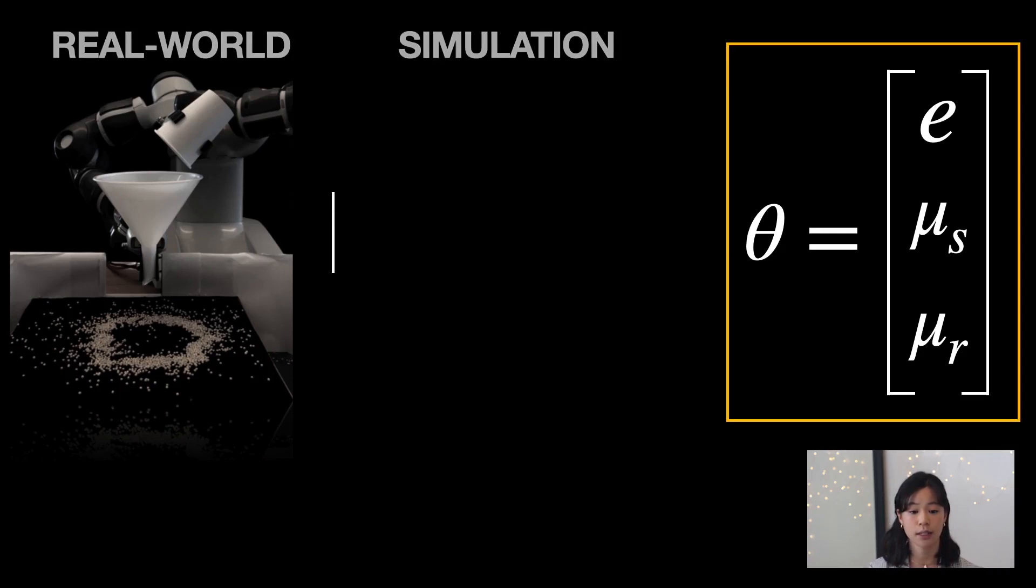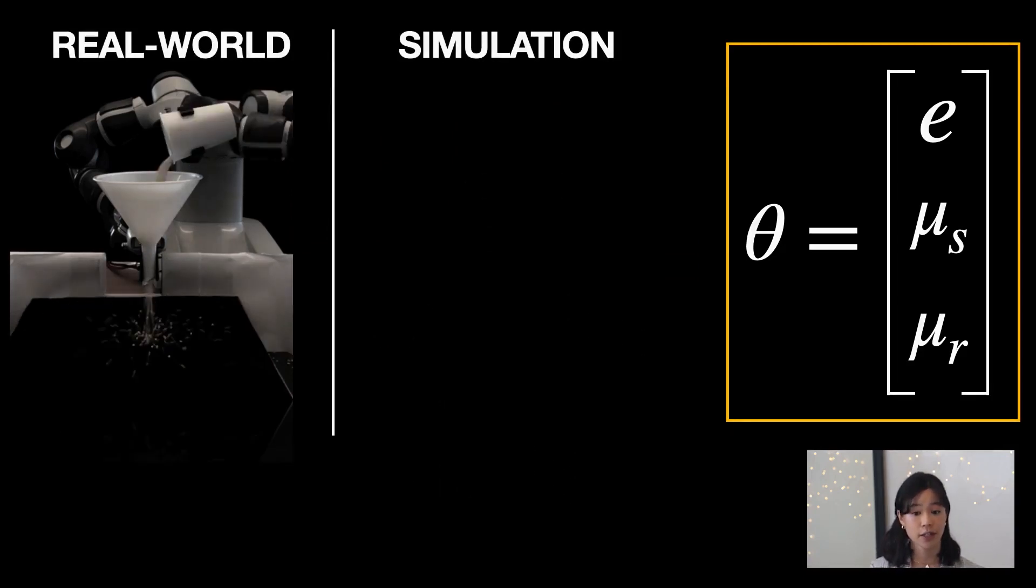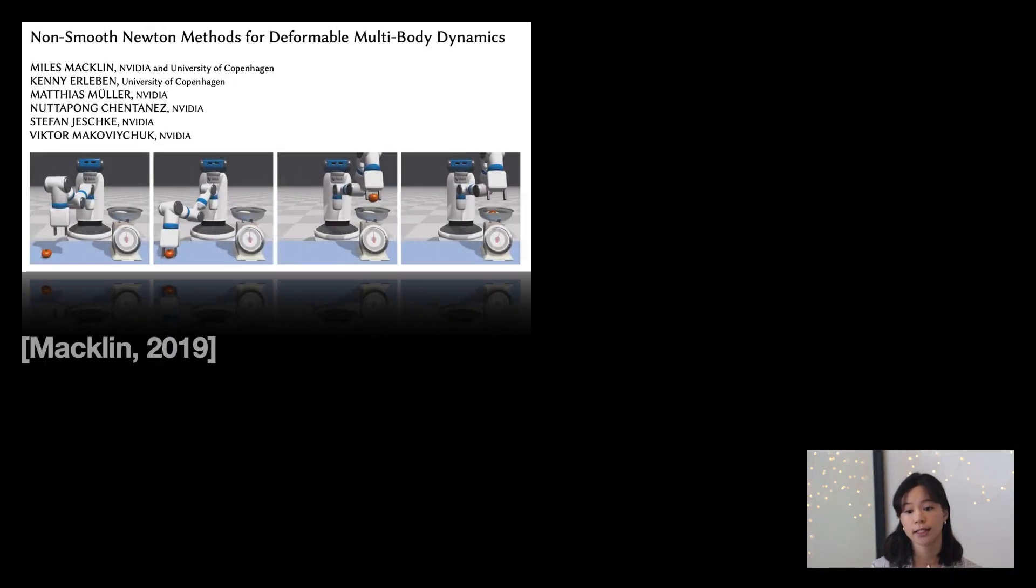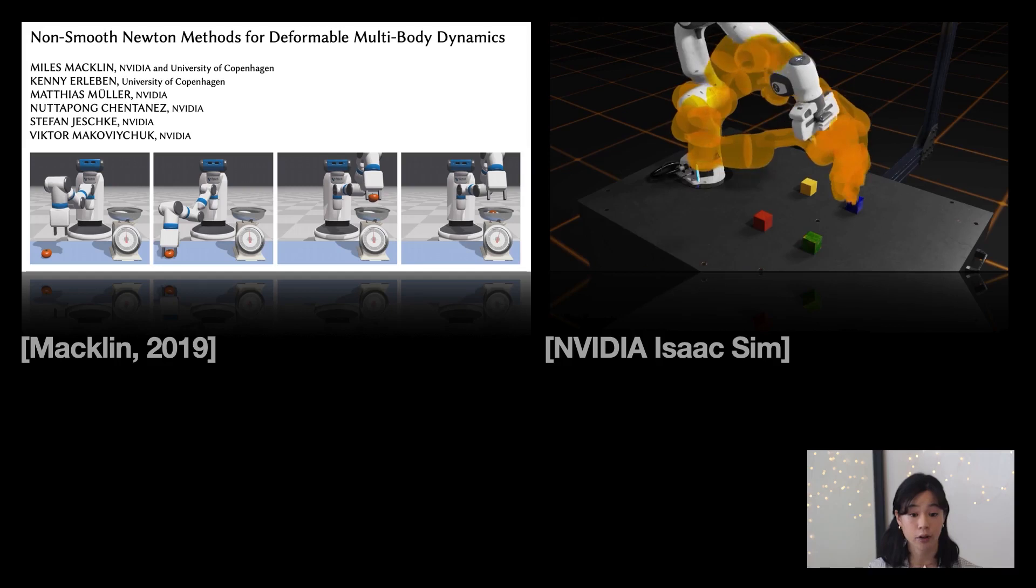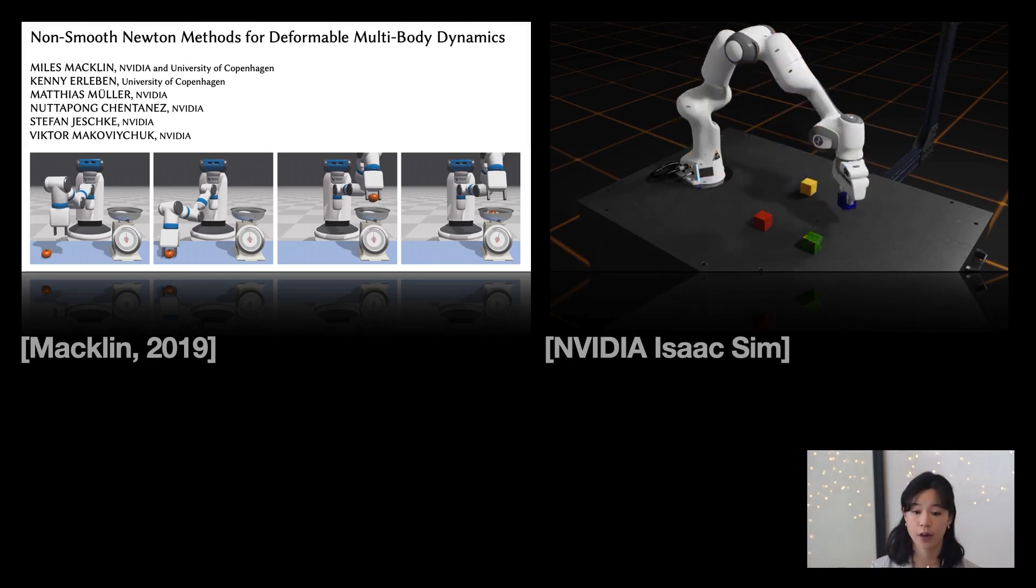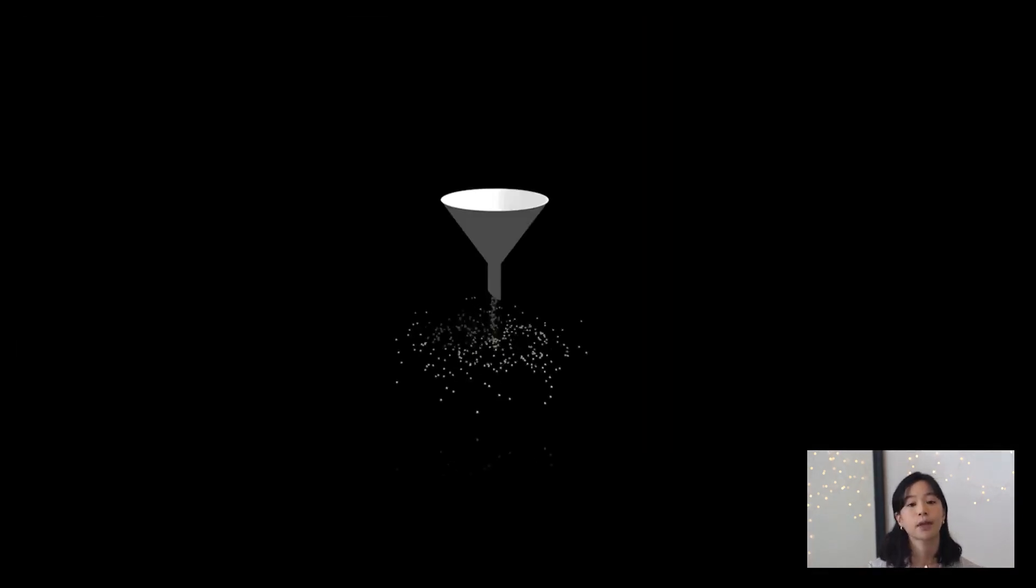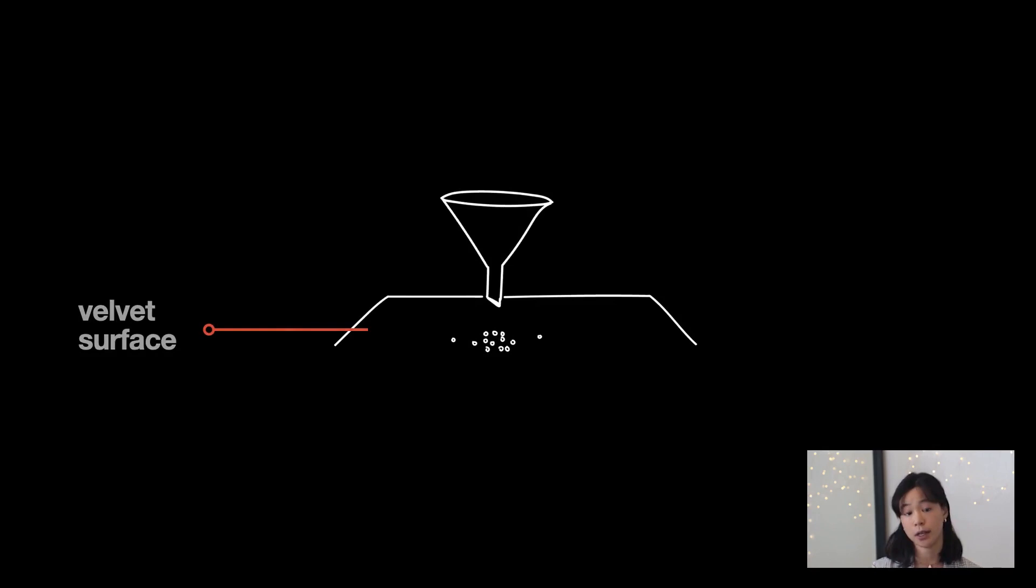We match this experimental setup in simulation and in the real world. While our inference method is simulator agnostic, we chose to model contact as a non-linear complementarity problem solved implicitly using a GPU-optimized non-smooth Newton solver in the NVIDIA-ISAAC simulator platform. This enabled both high accuracy and rapid simulation of 2,000 spherical grains. Meanwhile, for physical experiments, the funnel was positioned to match the simulated experimental setup, and black velvet covered the ground surface to limit the spread of the grains upon impact.